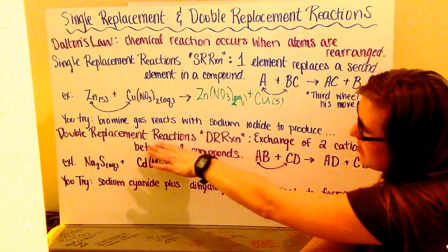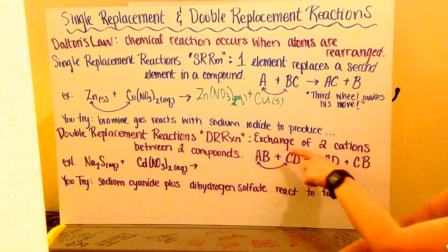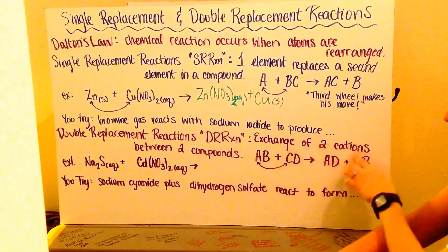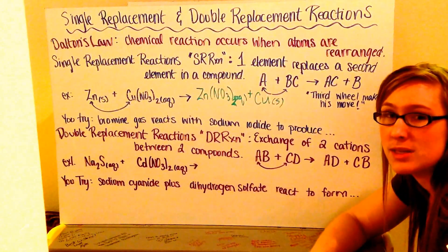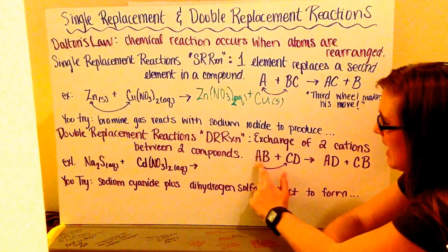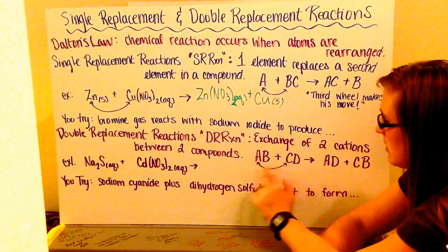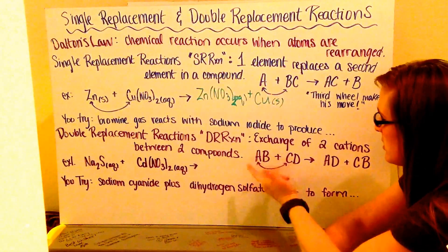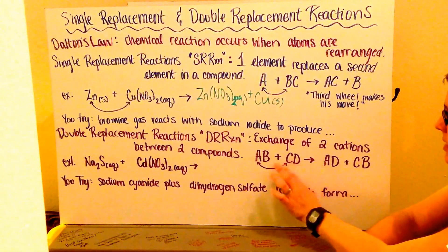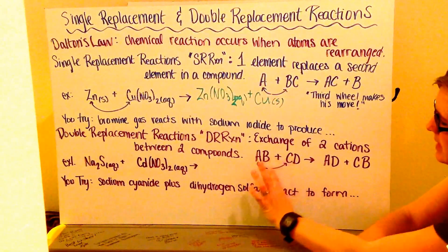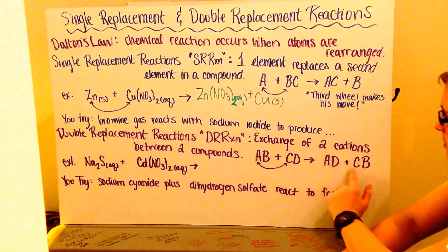Next, we have double replacement reactions, or DRRxn. Here, we're going to exchange, or it's an exchange of 2 cations between 2 different compounds. Remember that your cations are your metals, and they're always listed first. So, my cation here, I have A, and my cation here, C, and they're in these compounds AB and CD. Here, my A and C are going to switch places, and my A is now going to be with my D, and my B with my C. These are like two couples at a dance, and they switch partners. So, here, I have AB plus CD yields AD plus CB.